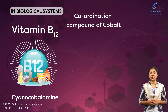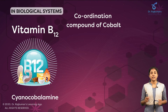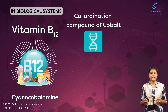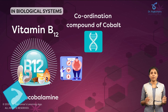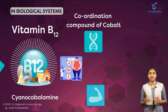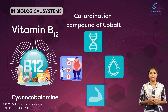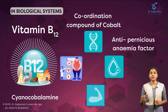Vitamin B12 is involved in the metabolism of every cell in humans — that is, in DNA synthesis, fatty acid metabolism, and amino acid metabolism — and mainly in developing red blood cells in bone marrow. Hence it is also known as the anti-pernicious anemic factor.